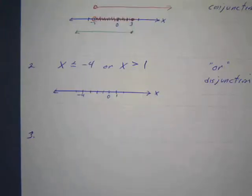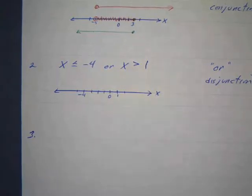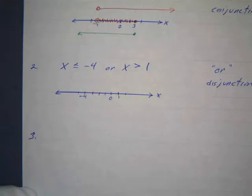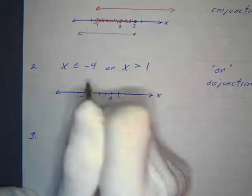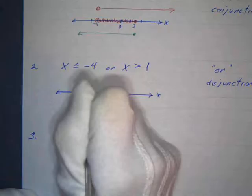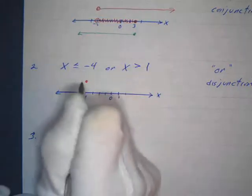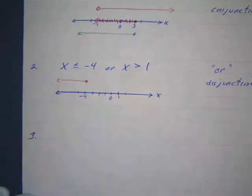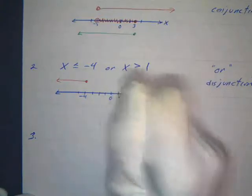Now let's try a disjunction — an 'or.' For a disjunction, you only need one condition or the other to be true. Usually with disjunctions the sets are disjoint, meaning they're separated. In this example, x is less than or equal to negative four, so we place a filled dot at negative four and shade to the left — those are all numbers less than or equal to negative four.